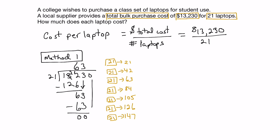We still have to bring down our next digit, which is 0. How many times does 21 go into 0? That is 0 times. So our answer is 630. Each laptop costs $630. We can verify this by taking 630 and multiplying it by 21 to see if we get 13,230.